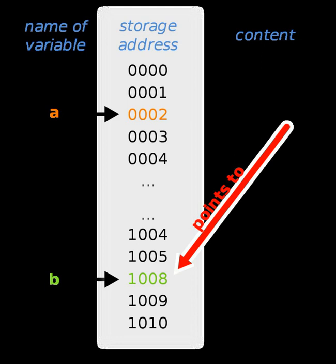As an analogy, a page number in a book's index could be considered a pointer to the corresponding page. Dereferencing such a pointer would be done by flipping to the page with the given page number and reading the text found on that page.